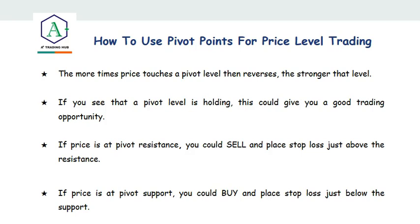The more times price touches a pivot level and then reverses, the stronger that level becomes. For example, if price is touching R1 and each time it touches R1 it reverses, that makes the R1 level very strong. You can mark a horizontal line on the chart so that even if you remove the pivot indicator, you can always reference that point as a key level. If price is at a pivot resistance, you could sell and place your stop just above the resistance; if price is at pivot support, you could buy and place your stop loss just below the support.